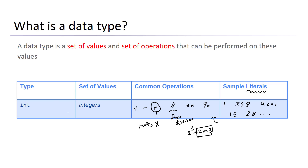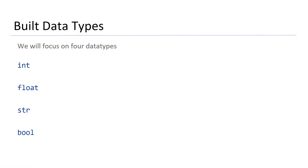Throughout this course, we will focus on the use of four different data types: integers, floats, strings, and Booleans. Integers, or int for short, are sequences of digits 0 through 9 — for example, 1234 and 99 are integers. Integers are basically whole numbers, so these are numbers that don't have fractions.